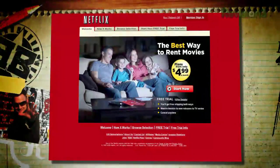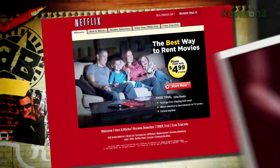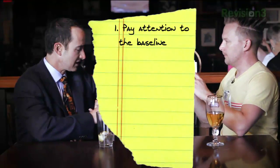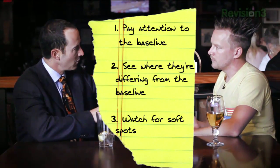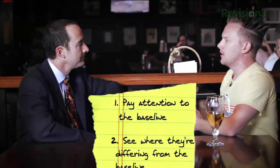Let's give everyone at home a toolbook. We talked about the five different things to look for when establishing the baseline — pay attention to the baseline, see where they differ from it, and notice the soft spots. You also started to illustrate the look of contempt and the look of disgust. What are some of the others, so I can categorize them all?